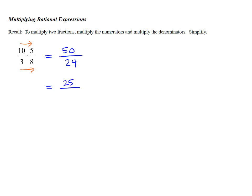2 divided into 50 is 25, divided into 24 is 12. 25 and 12 have no other common factor involved, so this would be the simplified result.